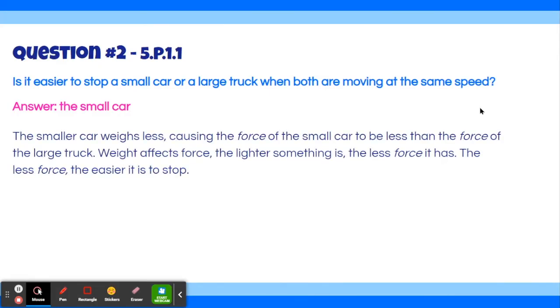This is because the small car weighs less, which causes the force of the small car to be less than the force of the larger truck. Weight affects force, so the lighter something is the less force it has. And vice versa, the heavier something is the more force it has. The less force an object has, the easier it is to stop.